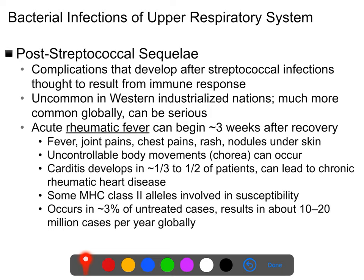A common sequela is rheumatic fever, usually associated with joint pains (hence 'rheumatic'), chest pains, rash, and nodules under the skin. It can result in cardiac damage — carditis, or inflammation of your heart — which can lead to chronic rheumatic heart disease, which is difficult to treat. Most people who have strep throat don't go on to develop sequelae, but about three percent of untreated cases do, which is enough that you don't want to mess around with it.